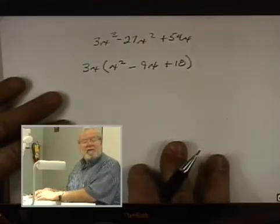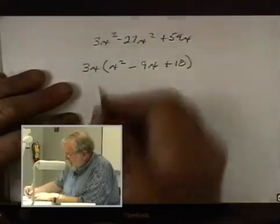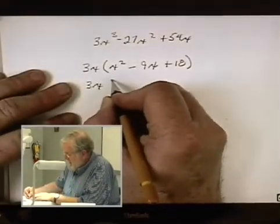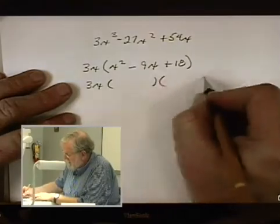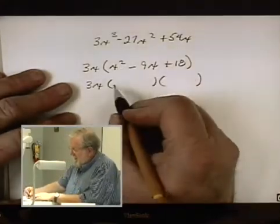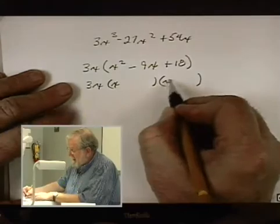Now we'll see if we can factor it this time. We're going to have 3x. We'll do our two parentheses. We look and we see we multiply x times x to get this x squared.